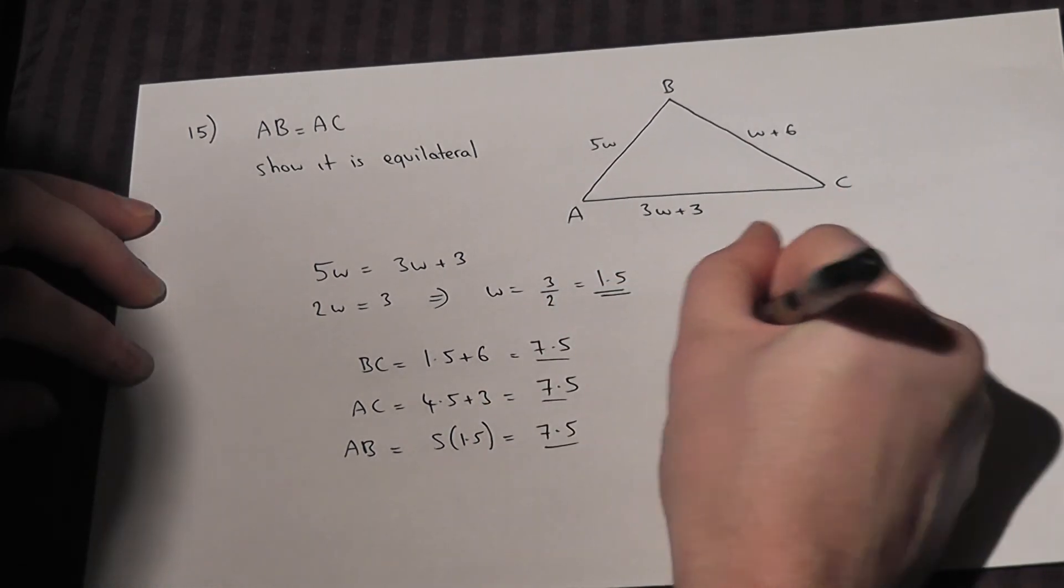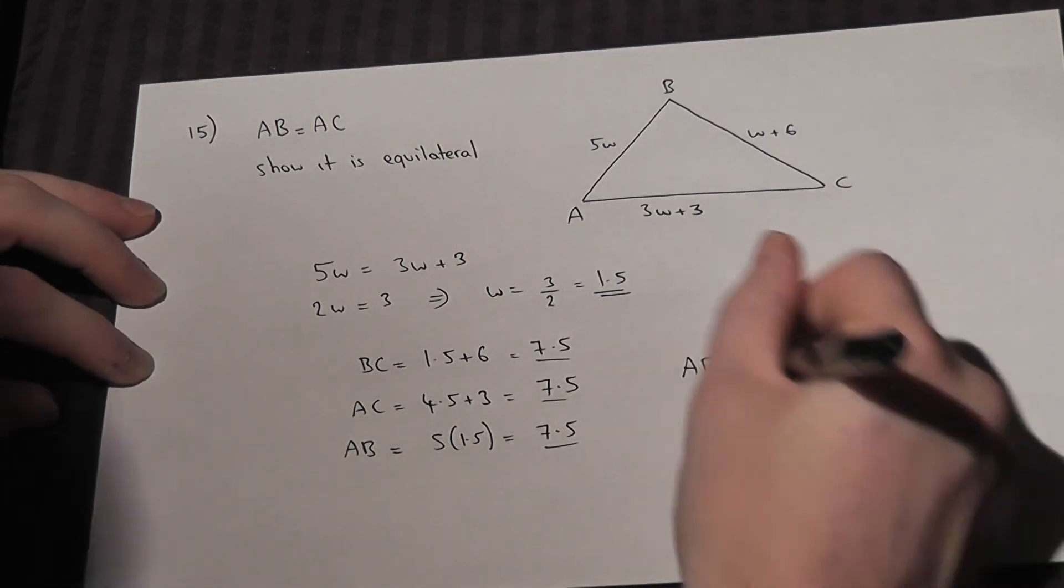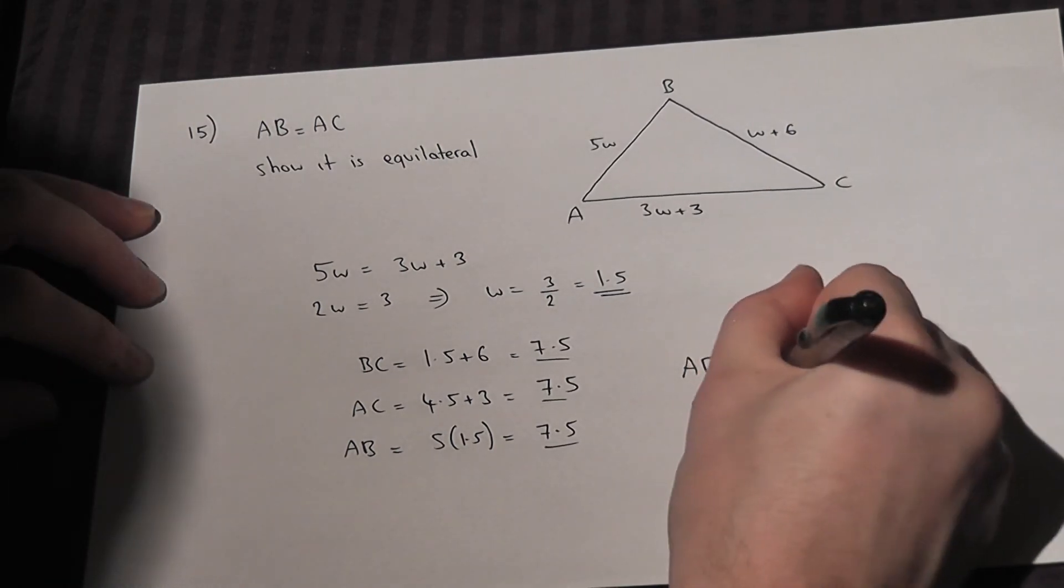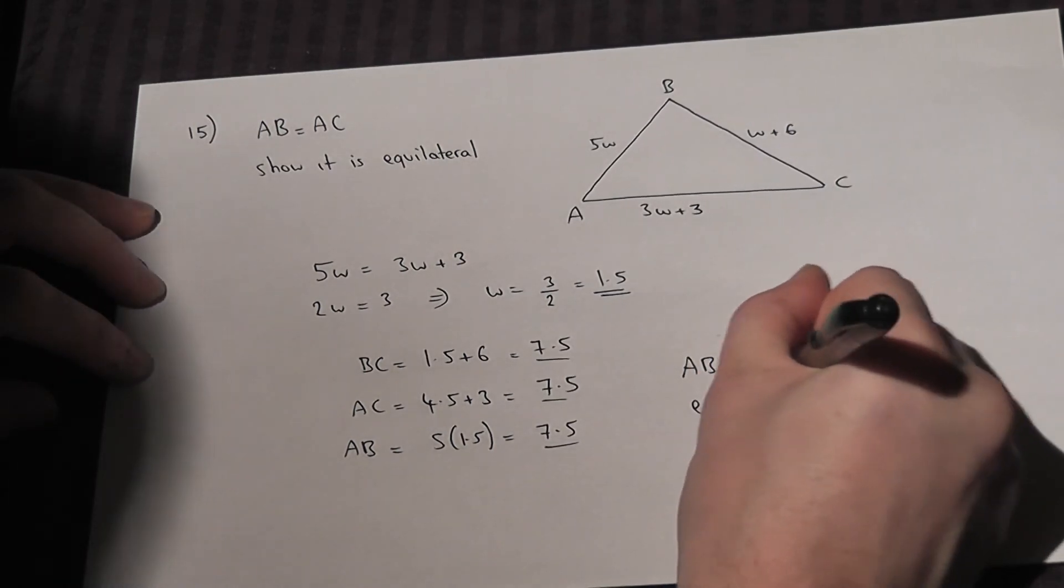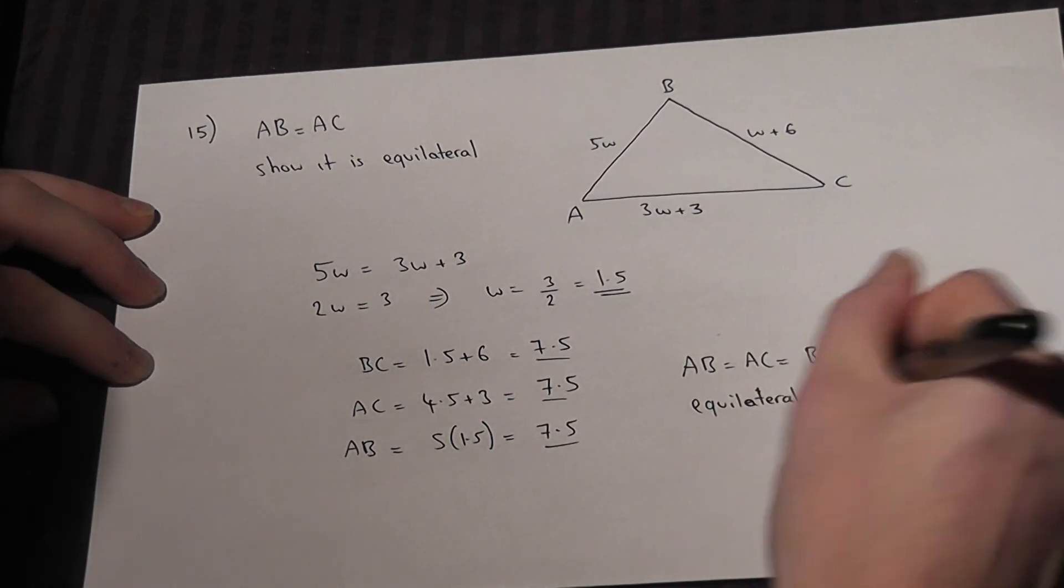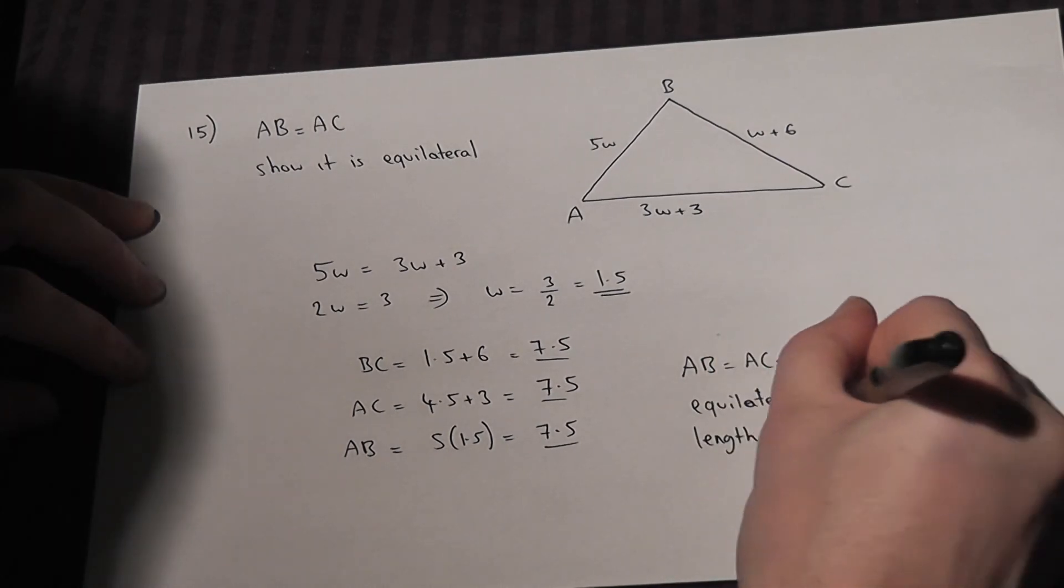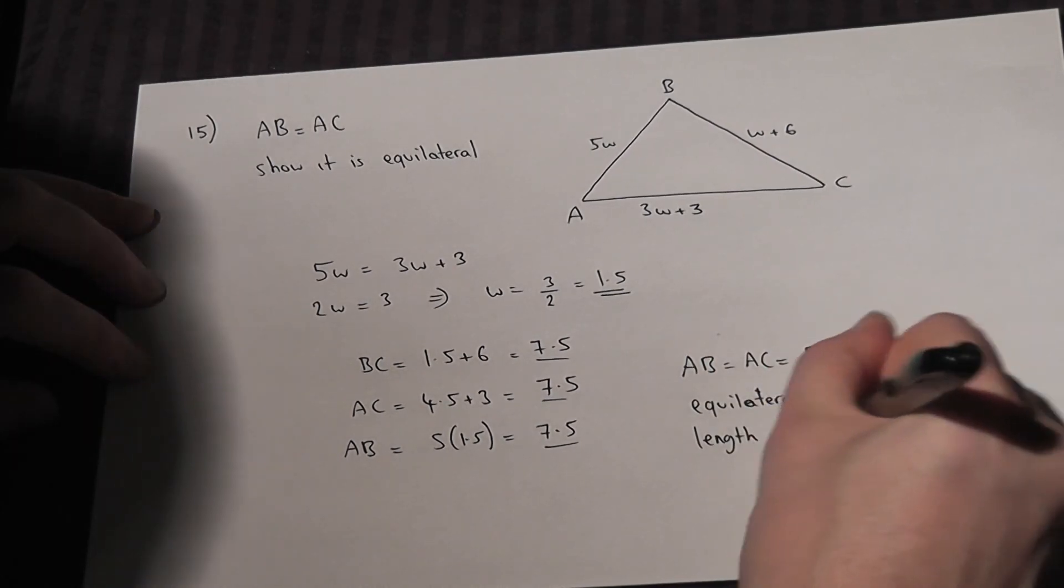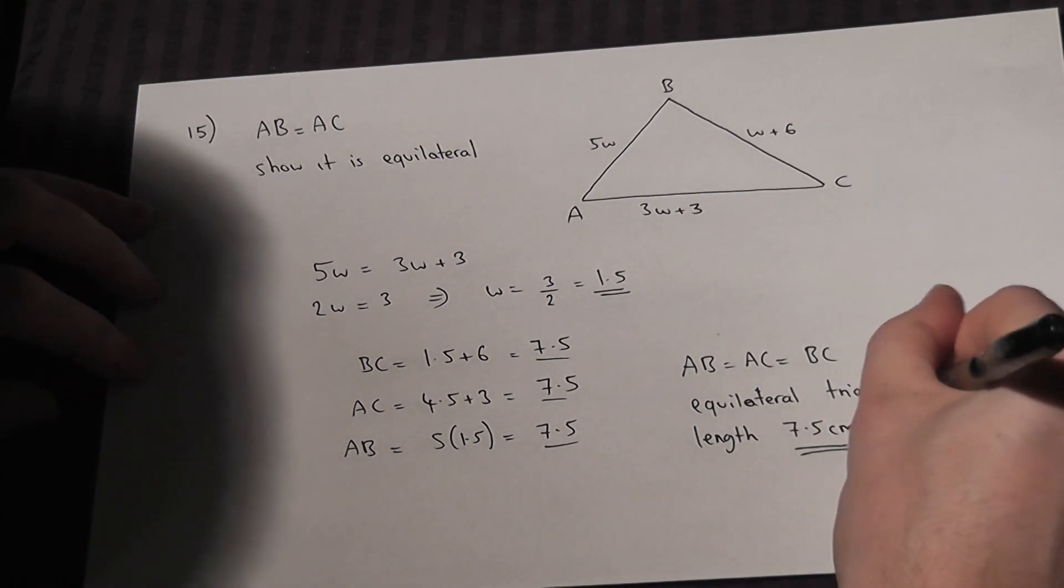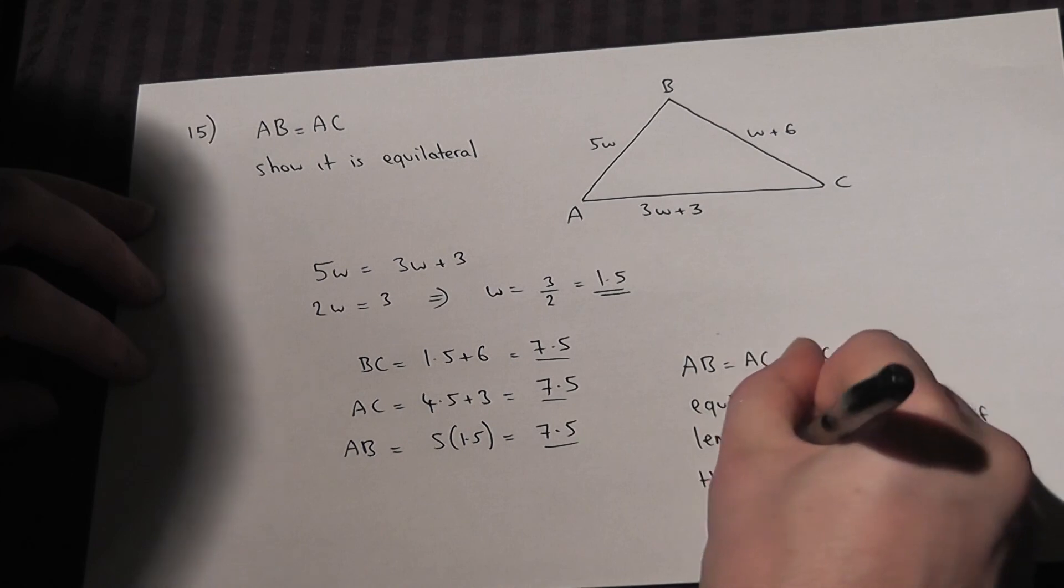So AB equals AC, which equals BC, therefore it must be an equilateral triangle with length 7.5 centimeters for each of the sides.